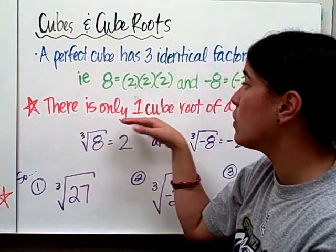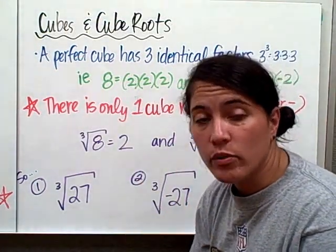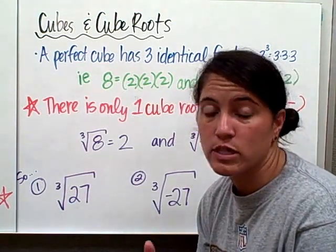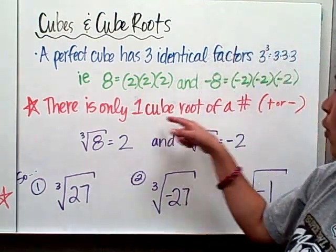So here's the key. There is only one cube root of a number. Only one. When we did square roots, there were two square roots, positive and negative. For cubed roots, there is only one cubed root. It's either positive or negative, but there is only one cube root.